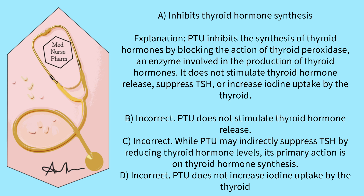Inhibits thyroid hormone synthesis. PTU inhibits the synthesis of thyroid hormones by blocking the action of thyroid peroxidase, an enzyme involved in the production of thyroid hormones. It does not stimulate thyroid hormone release, suppress TSH, or increase iodine uptake by the thyroid.